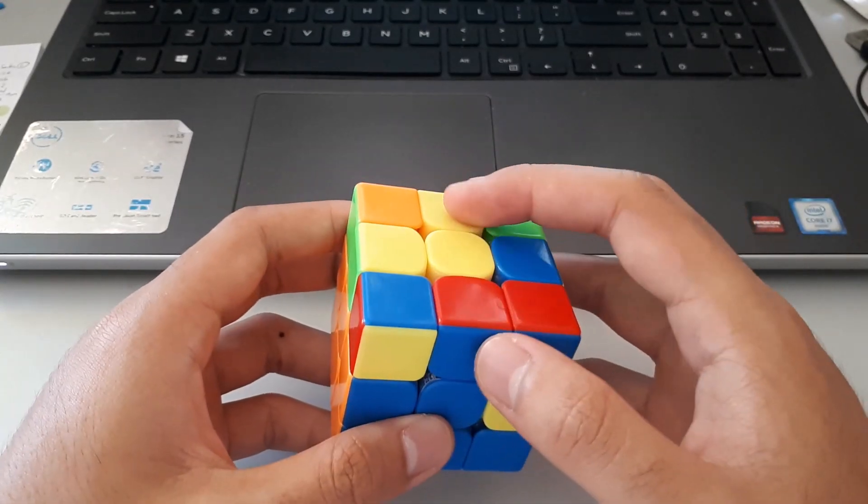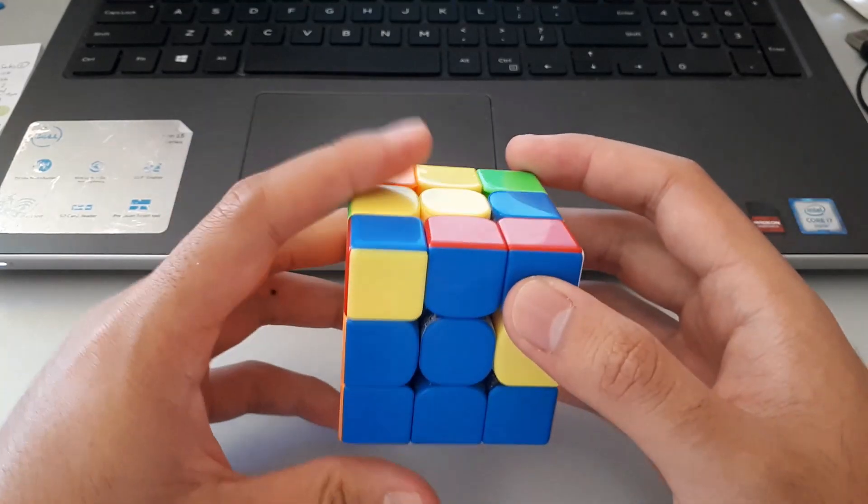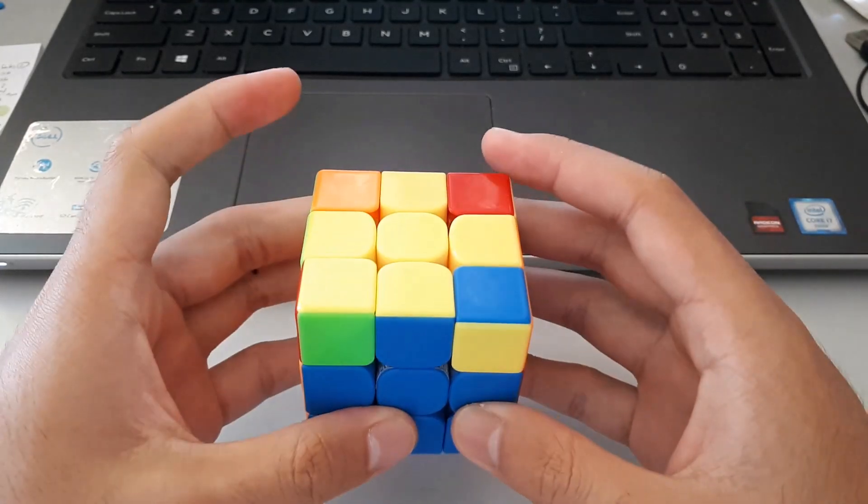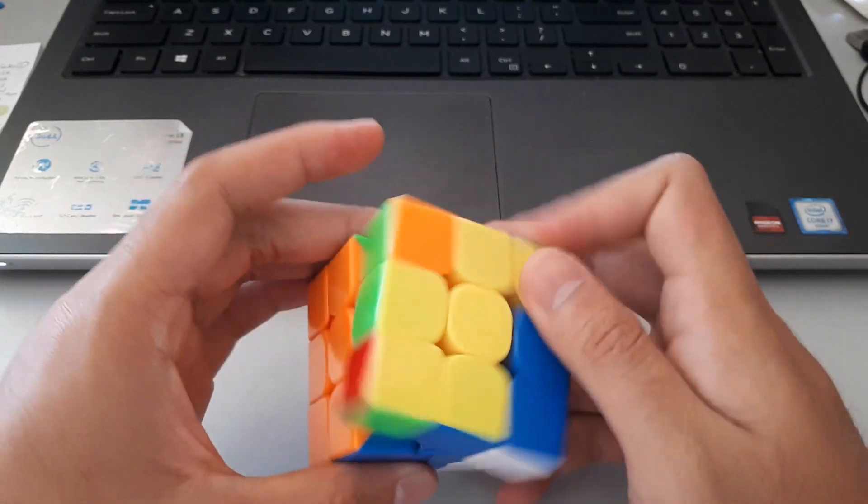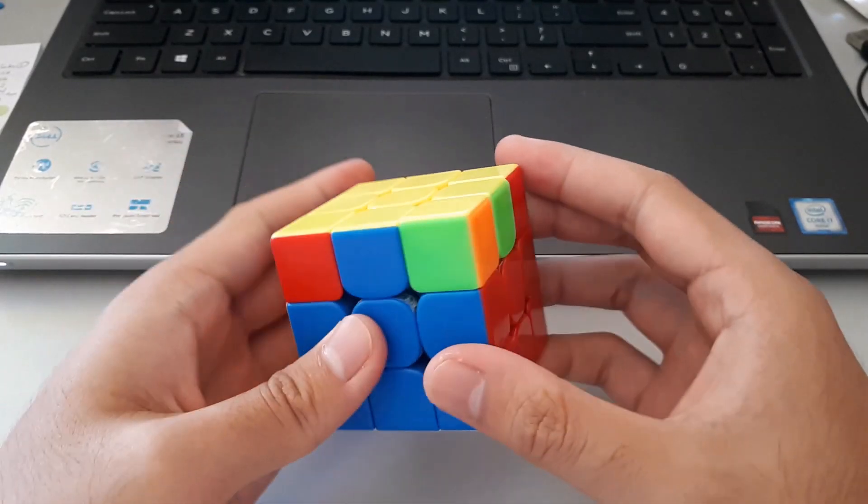I could rotate, but once again I've got these two edges oriented. So here, from this angle, I could do a reverse sledge to orient all of the edges and insert this F2L pair. And here I could cancel into the soon as well.